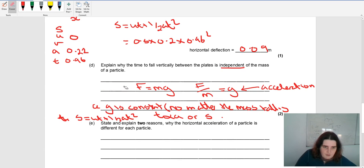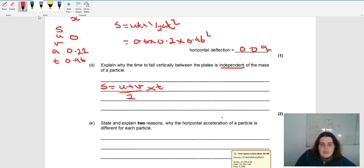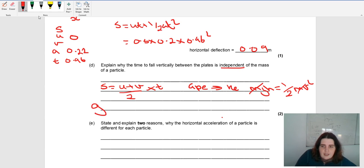Another method you could do is looking at energy. S equals U plus V over two times T. And since you've got GPE going to kinetic energy, MGH equals a half M V squared. Since the M's cancel, G is proportional to V squared.